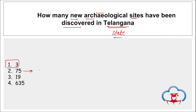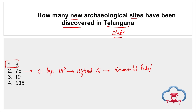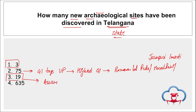Recently, UP got the GI tag and the total number of GI tags in UP is now 75, making UP the state with the highest GI tags in India. Some of the tagged products include Banaras Lal Peda, Banaras Lal Mural Painting, and Jaunpuri Imarti. In April, a total of 19 products got GI tags from the state of Assam.